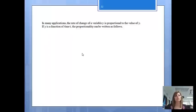In many applications, the rate of change of a variable y is proportional to the value of y. If y is a function of time t, the proportionality can be written as follows. This is saying the rate of change of a variable y, how fast y is changing, we can write that as dy/dt, and that is proportional to the value of y.